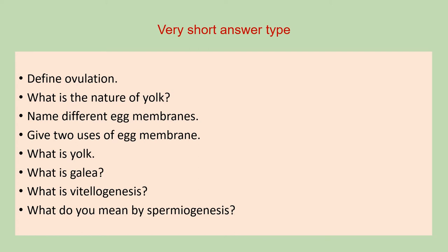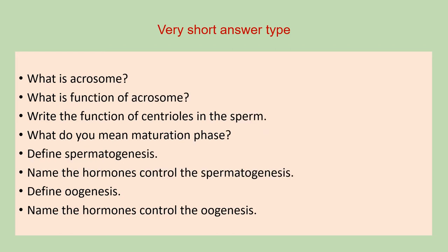Next is: what do you mean by spermiogenesis? This is a very important question, as there is a lot of difference between spermatogenesis and spermiogenesis, so be careful while answering this question. Next questions are: what is acrosome? What is the function of acrosome? Write the function of centrioles in the sperm. What do you mean by maturation phase? Define spermatogenesis. Name the hormones that control spermatogenesis. Define oogenesis. And the last question of this category: name the hormones that control oogenesis.